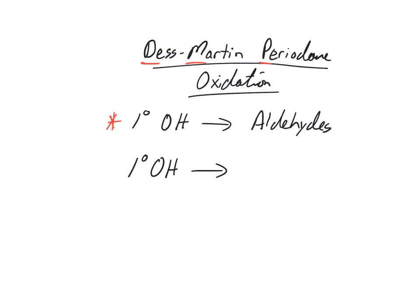We've learned before that you can take a primary alcohol and if it reacts with chromium or KMnO4, it doesn't stay at an aldehyde. It actually turns into a carboxylic acid. So it would be useful to be able to stop at the aldehyde stage.